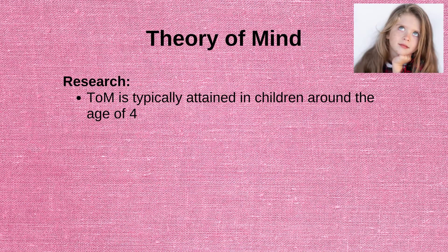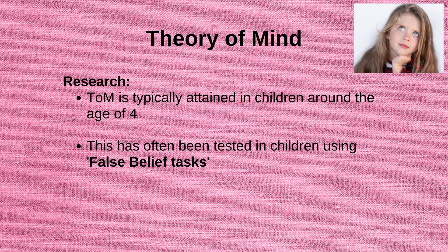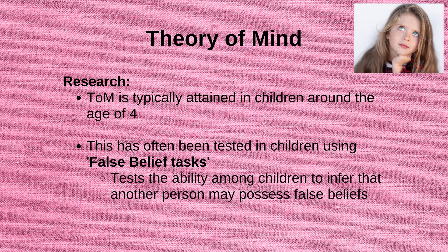Research has shown that Theory of Mind is typically attained in children around the age of four. This has often been tested in children using false belief tasks. These are experimental tasks that are designed to test the ability among children to infer that another person who does not possess the same knowledge as them may develop false beliefs.